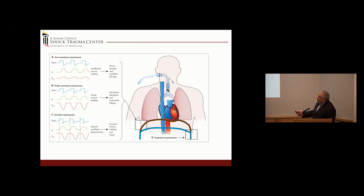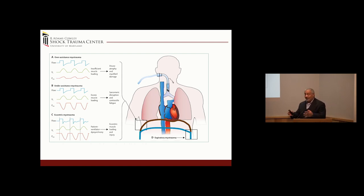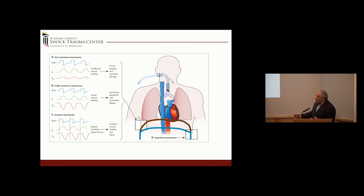Over-assistance is a real problem — patients aren't really ventilating, they're just being inflated and deflated by the machine. Human breathing is more sophisticated than that. But under-assistance is also a problem. If the ventilator isn't set correctly, patients have a lot of effort. We look at the blood gas and the ventilator, but at some point we have to get back to looking at the patient. There's a lot going on in the respiratory system far beyond what we monitor.